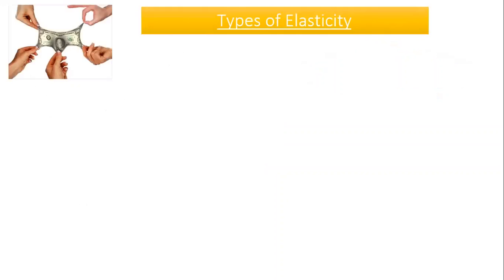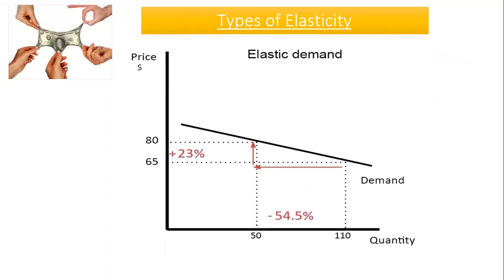Now we move to see the different types of elasticity. First, we have elastic demand — a demand relationship where the percentage change in quantity demanded is greater than the percentage change in price. For example, a price increase of 23% leads to a decrease in quantity demanded of 54.5%. The percentage change in quantity demanded is greater than the percentage change in price, giving a price elasticity of demand greater than one in absolute value. This is called elastic demand.